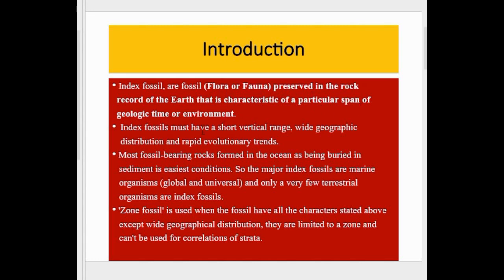Index fossils have a short vertical range, meaning they are found only in a short geological time period, but they have wide geographic distributions. For example, suppose any fossil is found in the Jurassic age and it has been found in India as well as Australia — it means it has wide geographic distributions, but is found only in the Jurassic period.